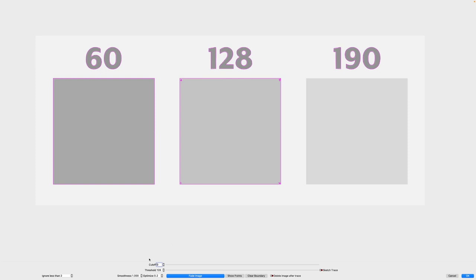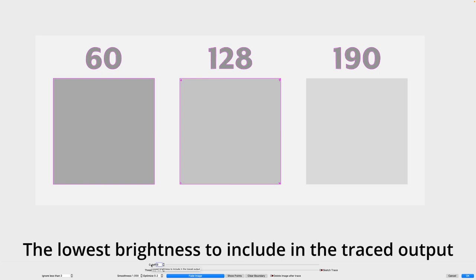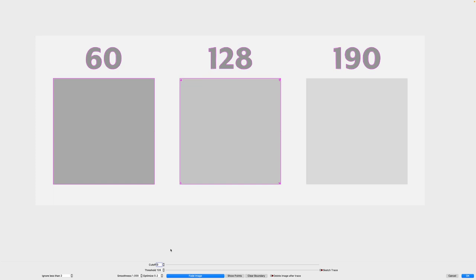Cutoff is currently 0, meaning the lowest brightness to include in the traced output. Brightness values run from 0 to 255 — that's the full scale from 0 which is black all the way to 255 which represents white. Everything in between is essentially a shade of gray, which is what we've created in our test grid with values of 60, 128, and 190.